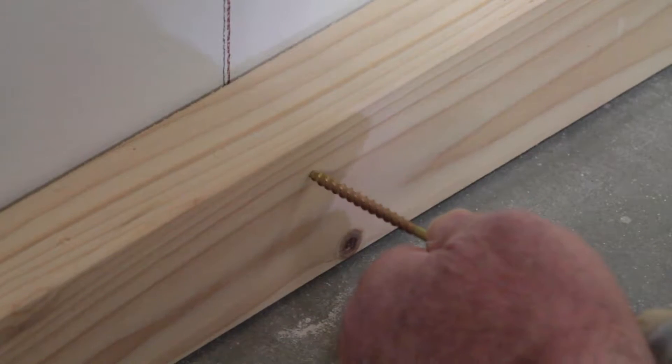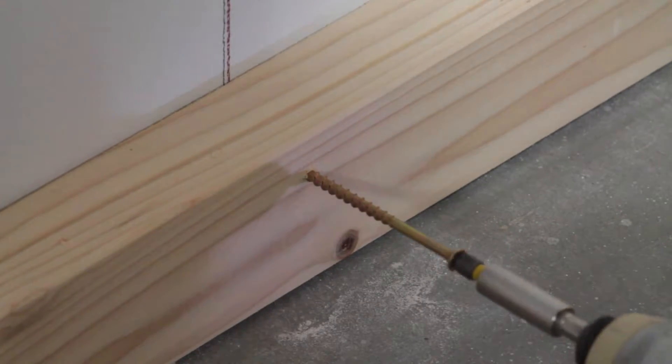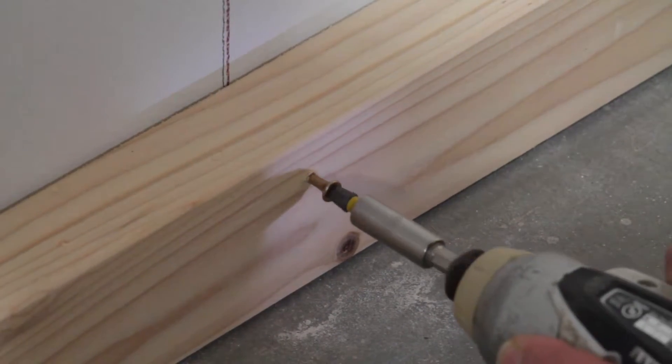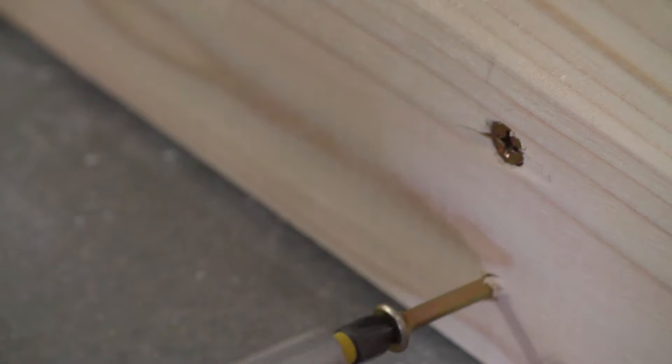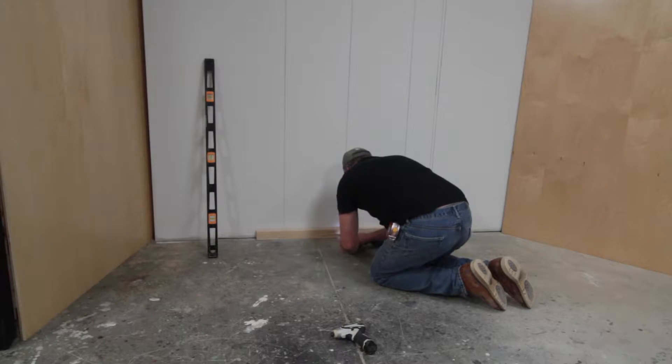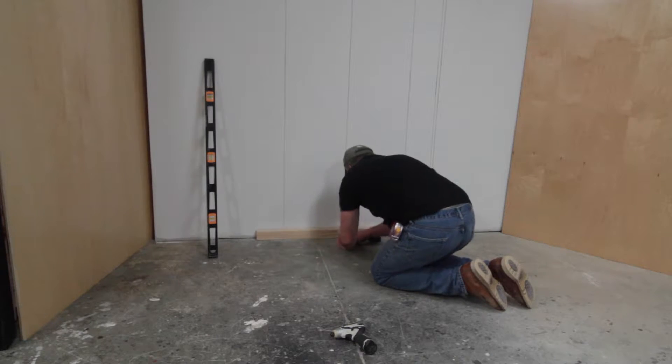Each horizontal strut will get two 3 1⁄2 inch screws per vertical stud location. That's 6 per strut and 36 total when complete.